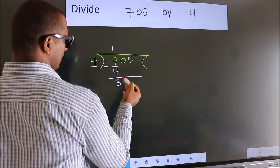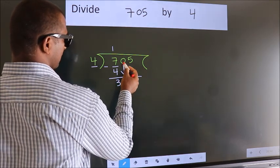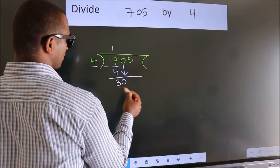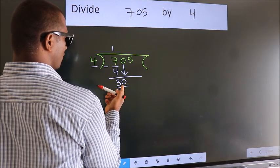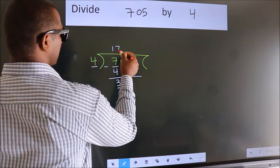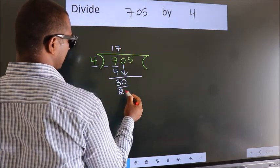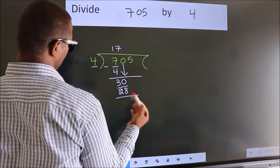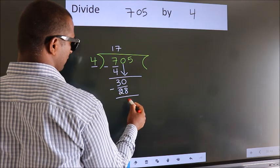After this, bring down the beside number, so 0 down, so 30. A number close to 30 in the 4 table is 4 7s, 28. Now we subtract, we get 2.